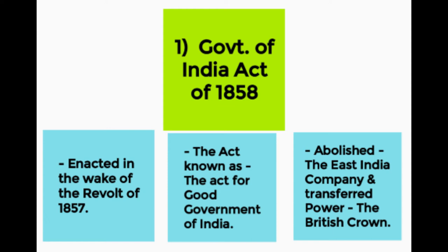Under this act, it abolished the East India Company and transferred the power of the government, territories, and revenues to the British Crown. This act was introduced immediately after the great revolt which began in India in 1857. Through this act, the entire power of the British East India Company — to govern territories, collect revenues, and all other powers — was transferred back to the Crown, to the government of Britain in England, and the East India Company was completely abolished.